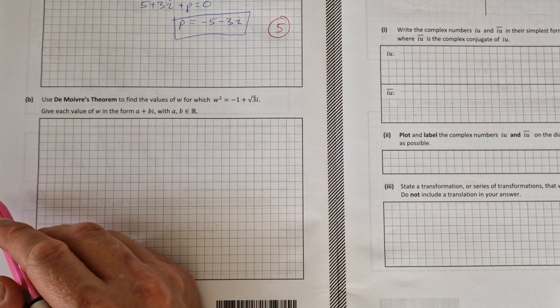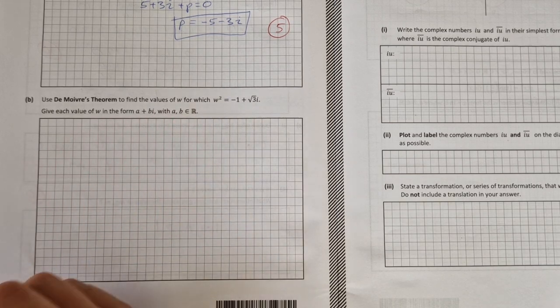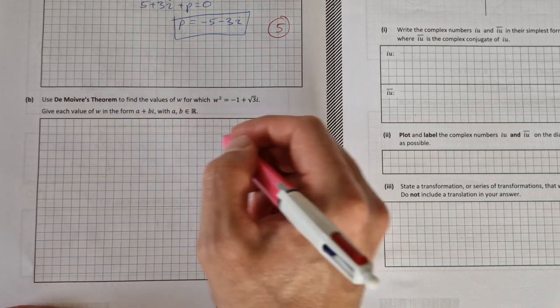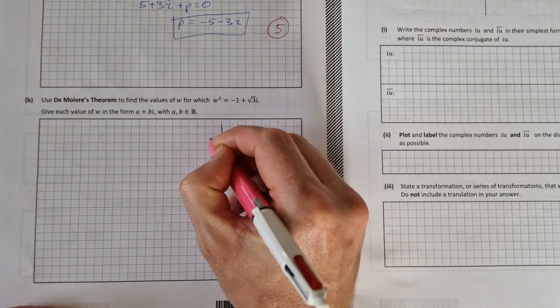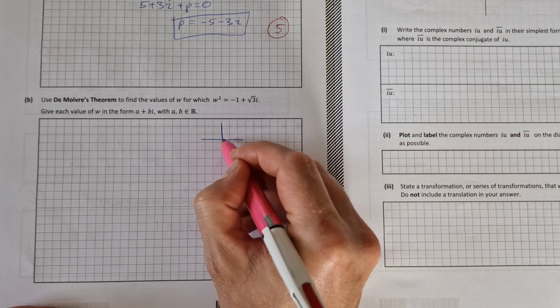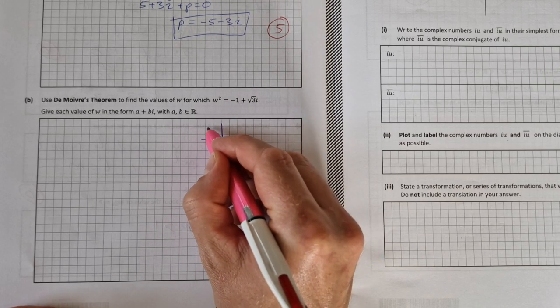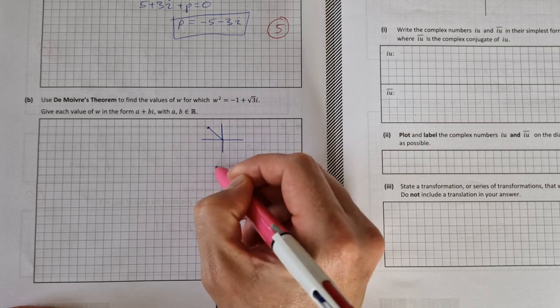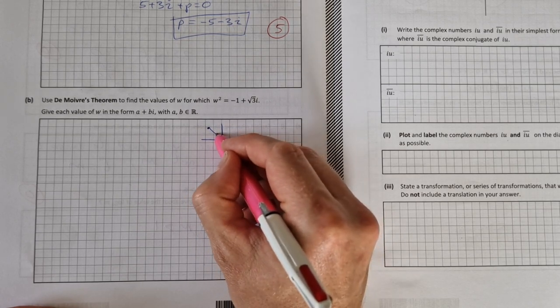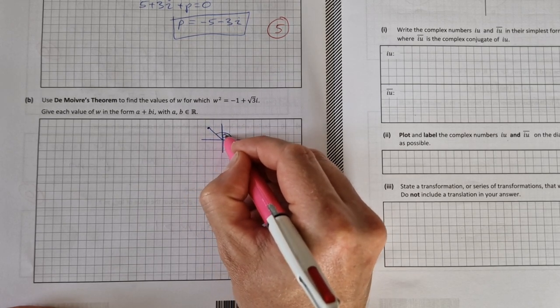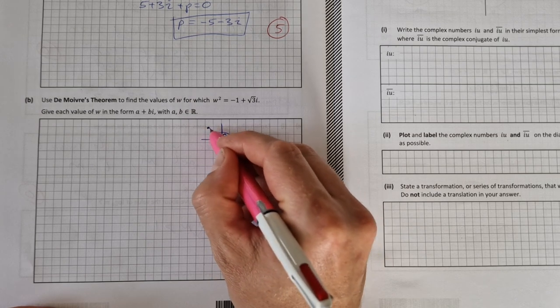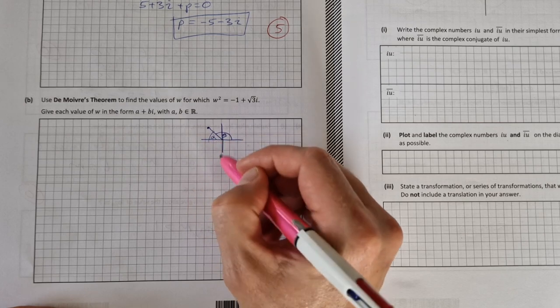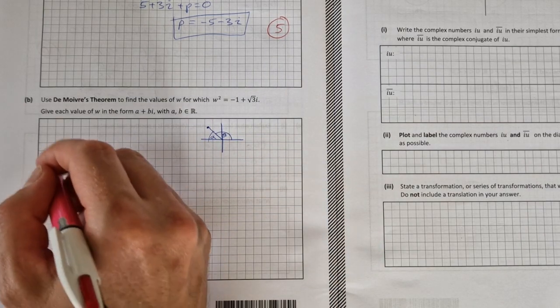First thing we need to do is write this in general polar form. First, I'm going to draw a little sketch of it up here. So it's minus 1 plus root 3. So this is our complex number. We need our angle here, our argument theta, and we also need our modulus here as well. In order to find the argument, I need to first find that angle there, alpha.